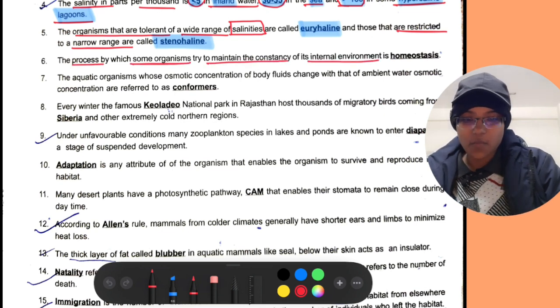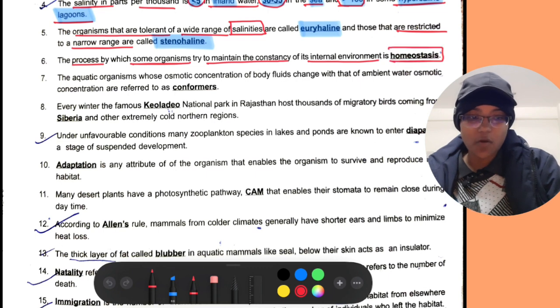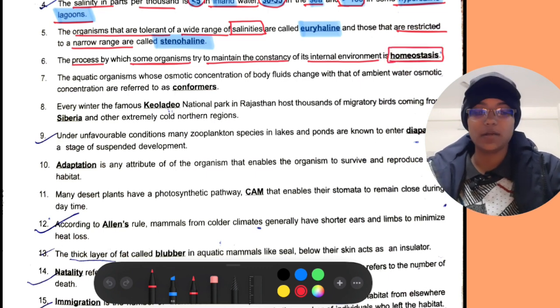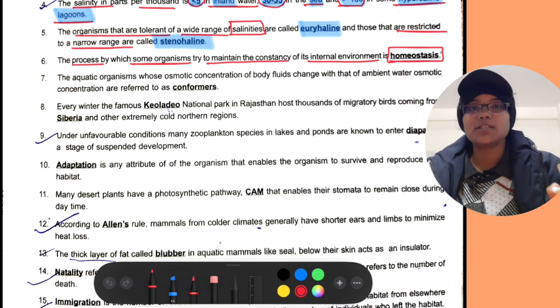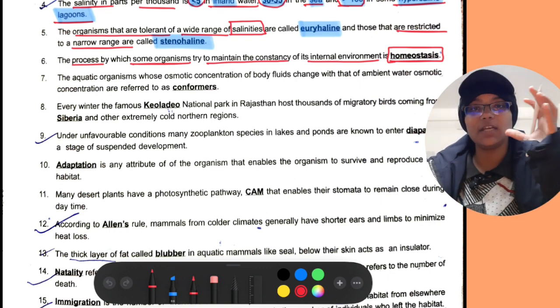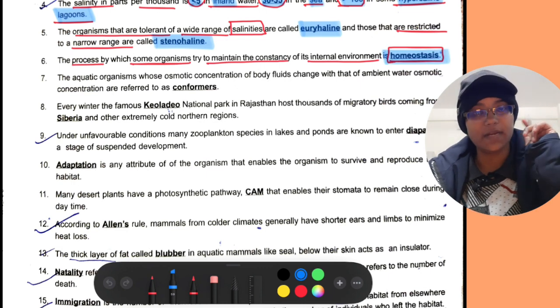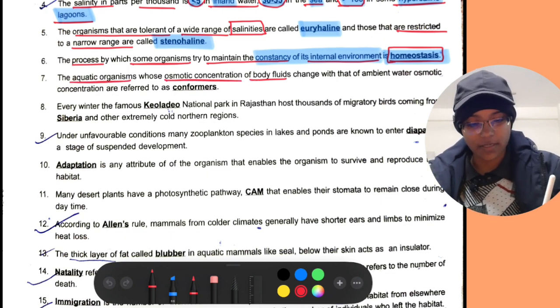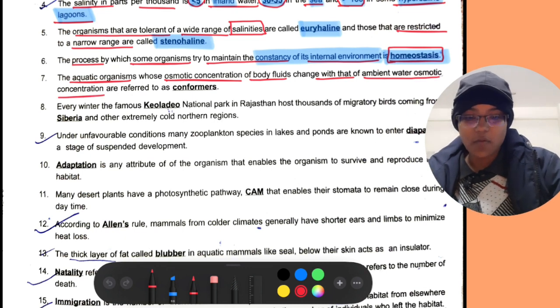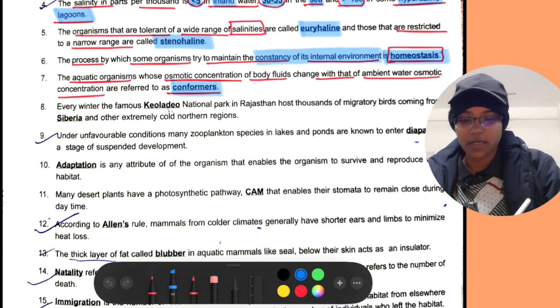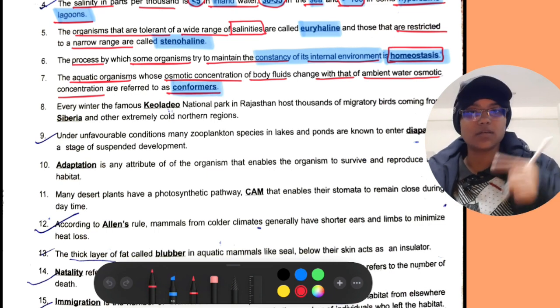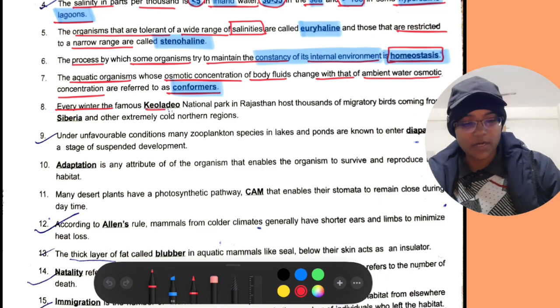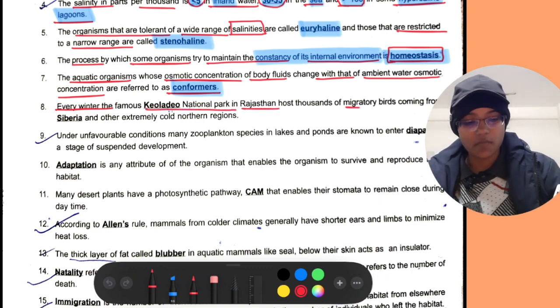The process by which some organisms try to maintain the consistency of its internal environment is homeostasis. Aquatic animals whose osmotic concentration of body fluid changes with that of the ambient water osmotic concentration are referred to as conformers.